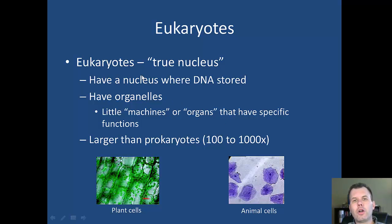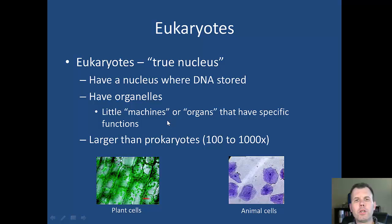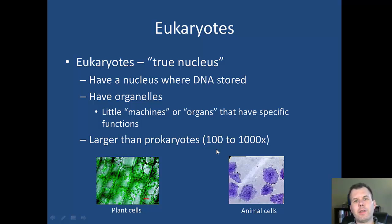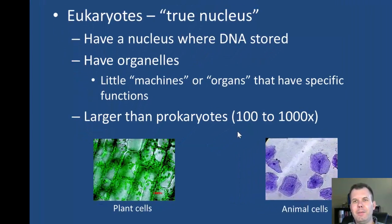Eukaryotes are called eukaryotes because they're considered the true nucleus or true kernel — 'eu' meaning true. They have a nucleus where DNA is stored, and they also have little machines on the inside called organelles, which have specific functions. They're much larger than prokaryotes — anywhere from a hundred to a thousand times bigger — and you'll see this difference in the lab under the microscope.